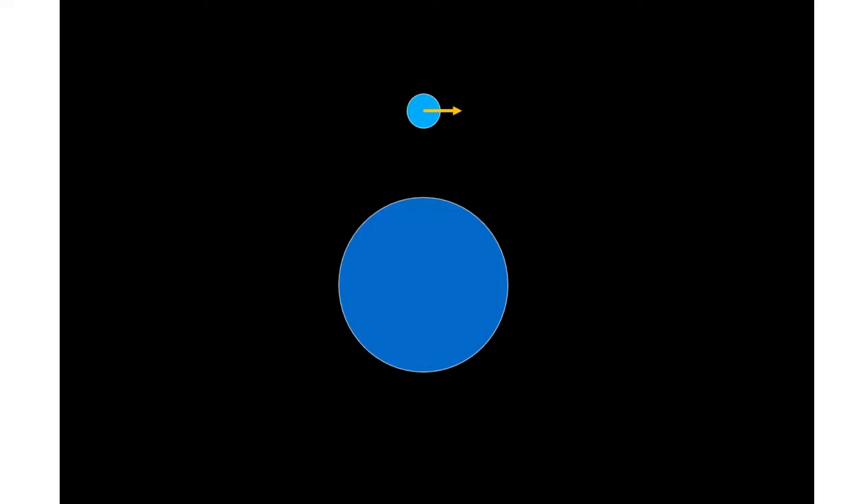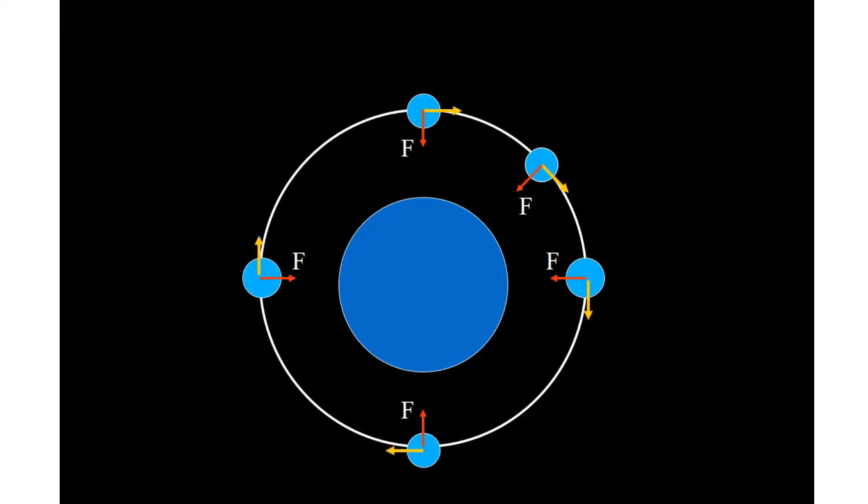You've seen the treatment of orbits from a circular motion standpoint, where the centripetal force results in a continual change in the direction of motion. This gives you circular motion.